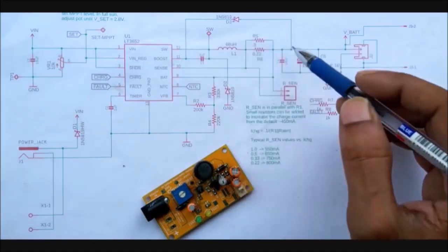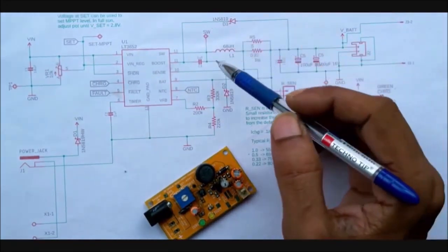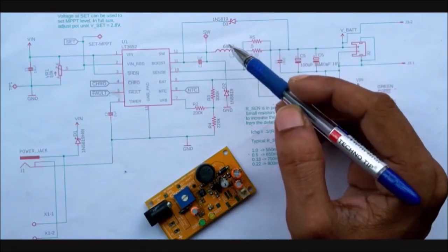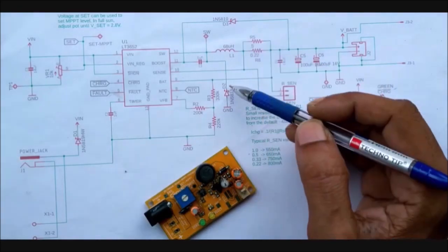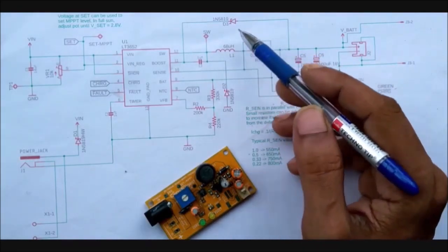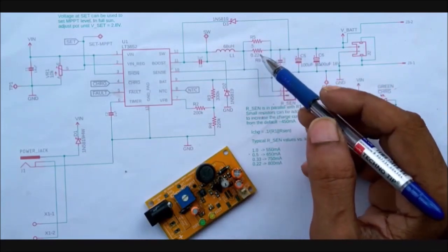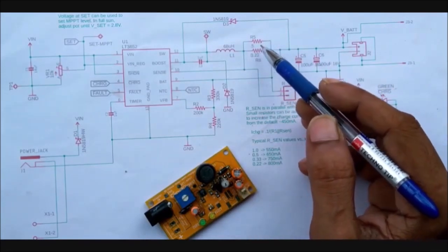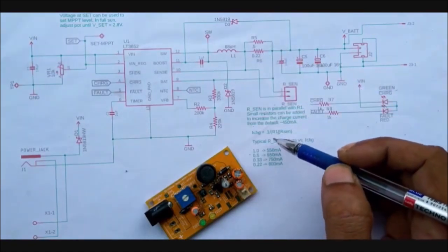Moving on to the buck boost regulator section here. So like always our regulator has an inductor of 68 microhenry and two Schottky diodes one over here and the other over here and it works like a typical buck boost circuit. Another interesting thing to note here are these resistors which are the current sense resistors. These resistors are used to set the battery charging current. The calculation is given over here. I is 1 by R parallel to R sense resistor.